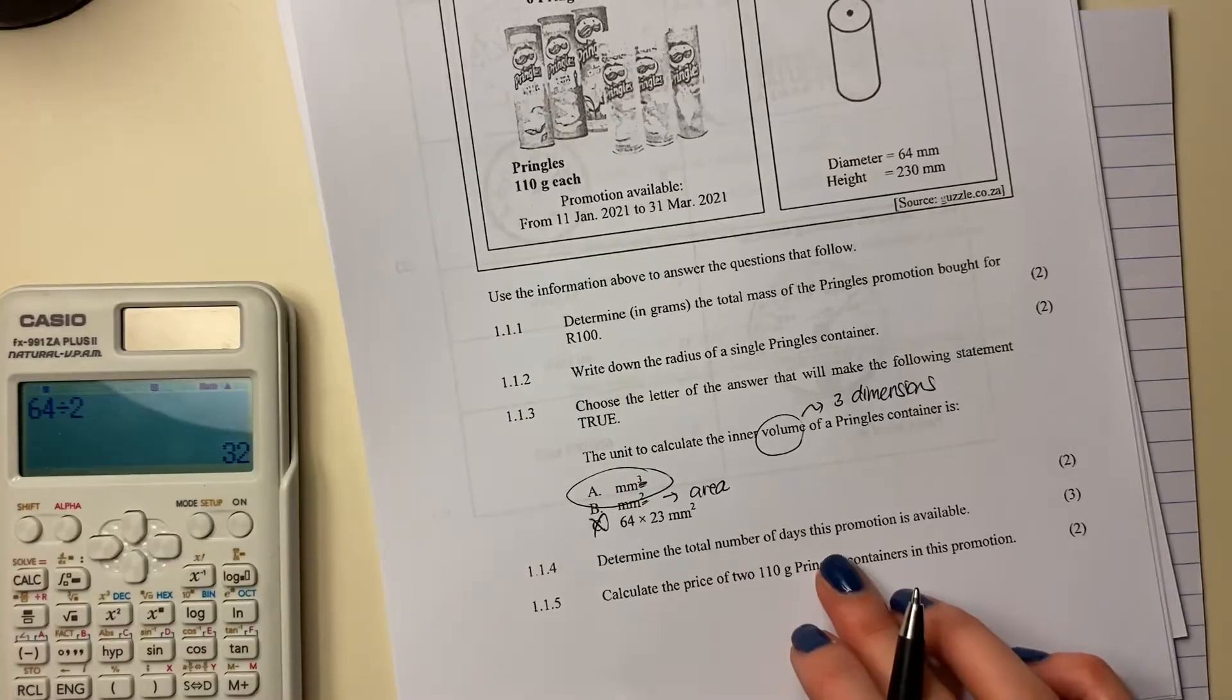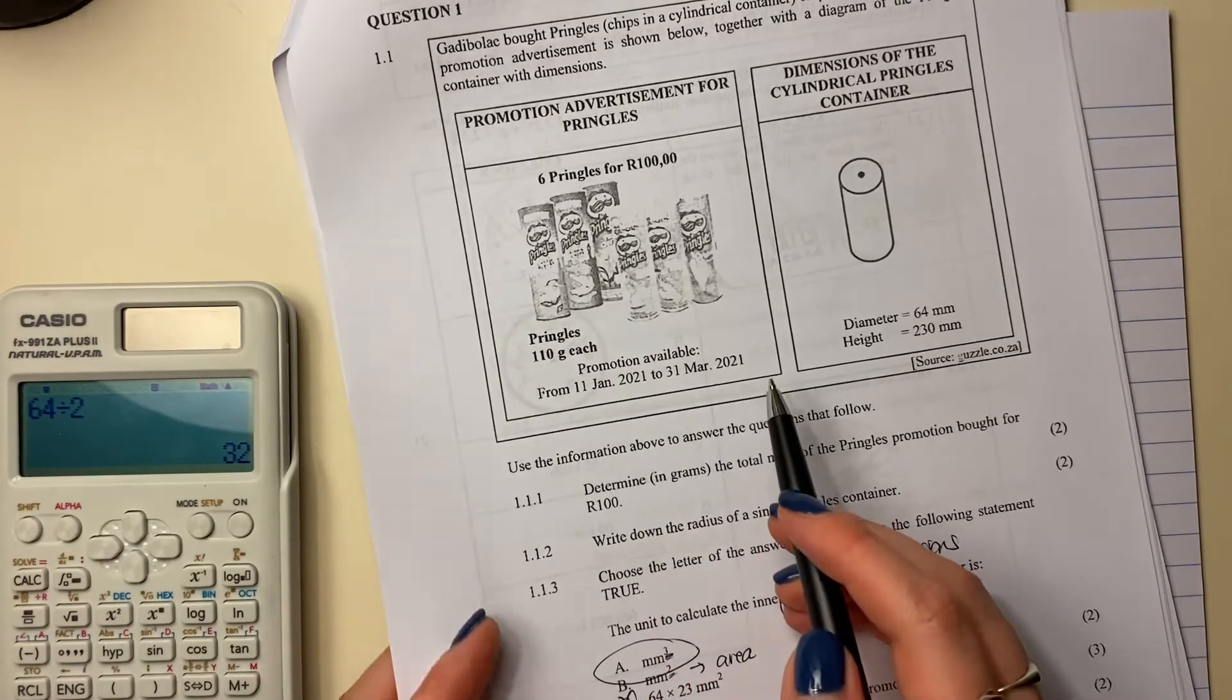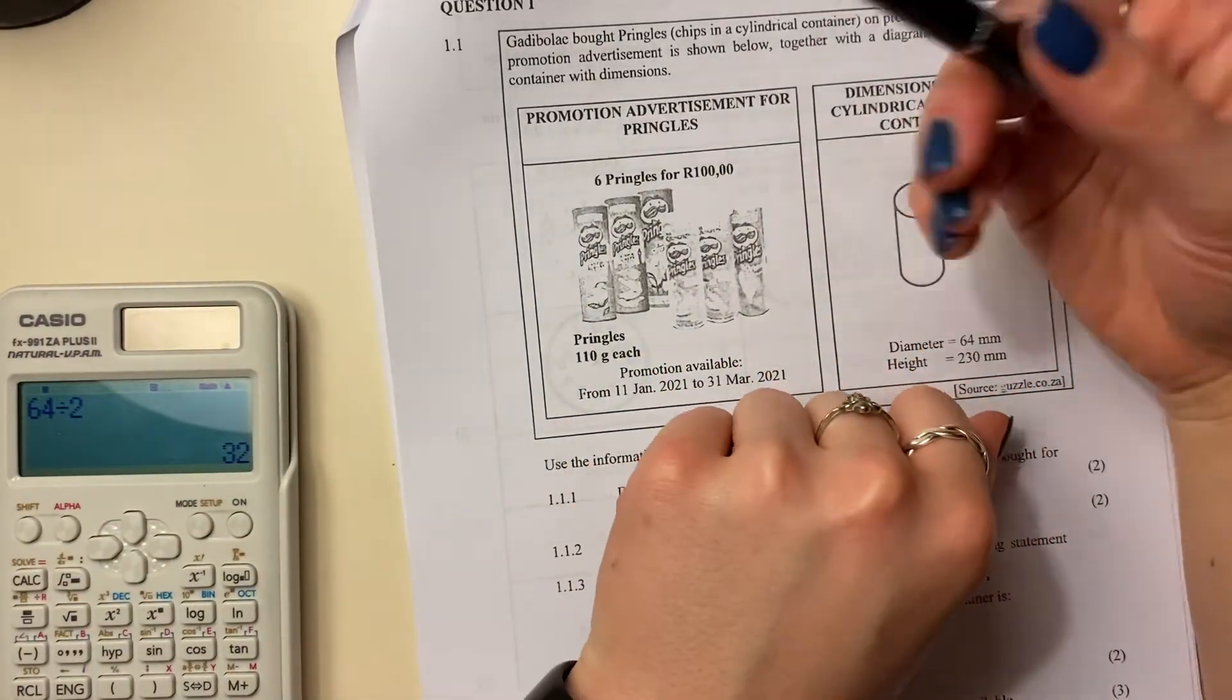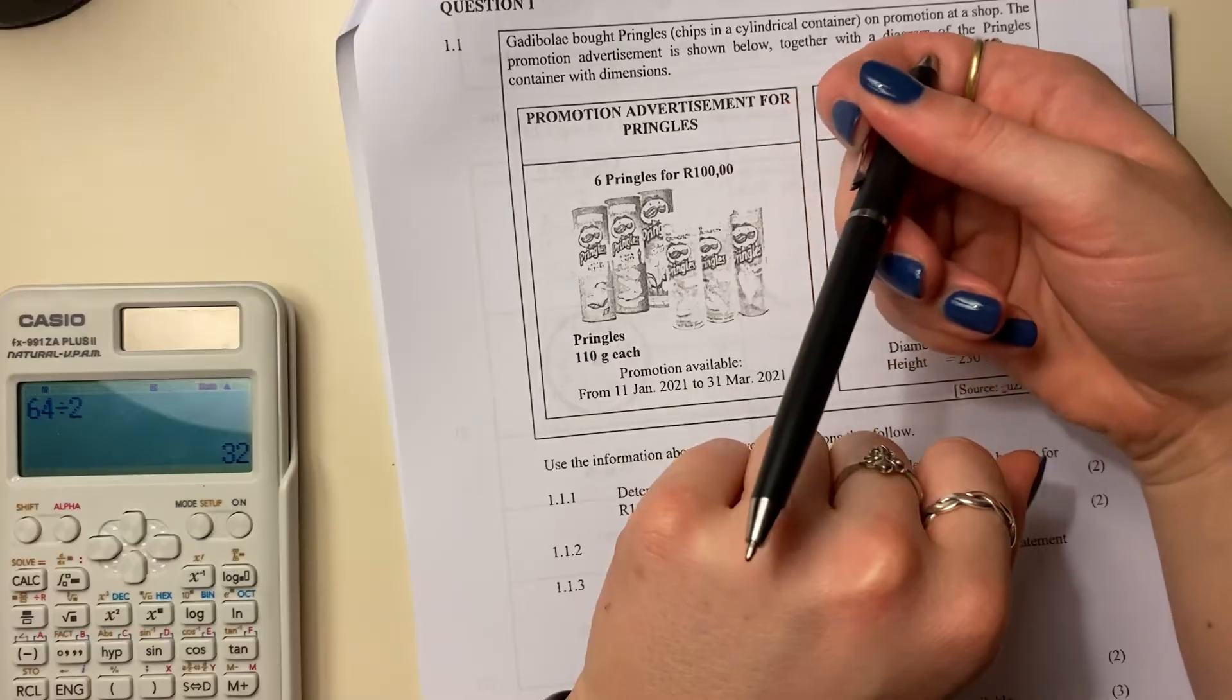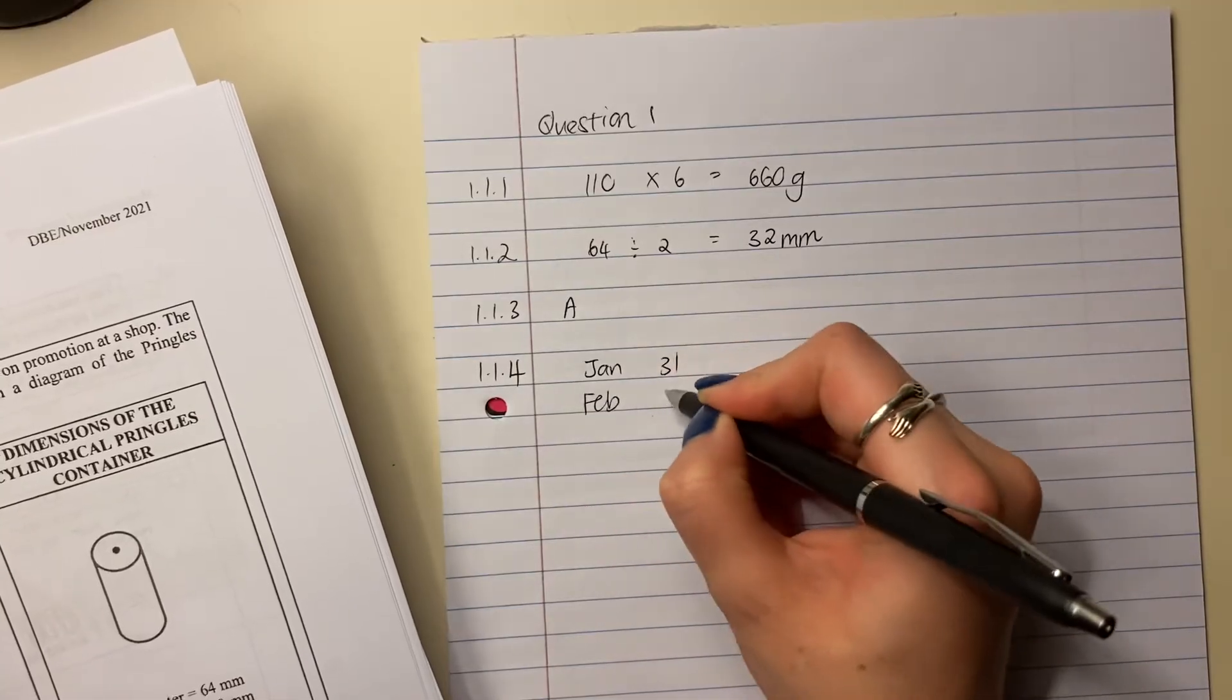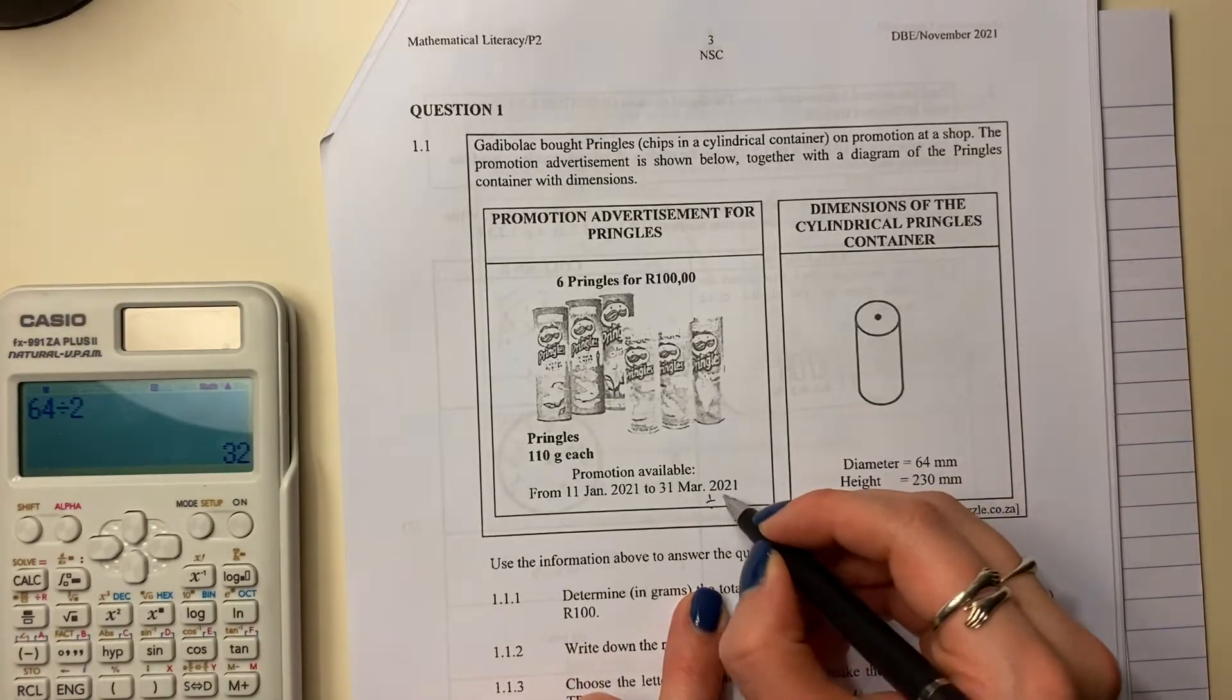Determine the total number of days this promotion is available. So the promotion is available from the 11th of Jan 2021 to 31 March 2021. So let's make sure that we label our question correctly. So remember, I've taught you this trick before. When it comes to months, use your knuckles. Start on the top of a knuckle, so it's January, February, March. So in January there's 31 days. So I'm going to say Jan there's 31. Feb, generally speaking there's 28. This is not a leap year, 2021, and you could be saying, oh Margie how do you know that? Well, if you want to see if a year's a leap year, divided by 4. Let me show you in the calculator.